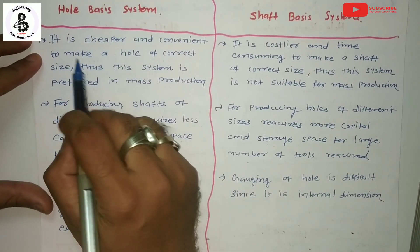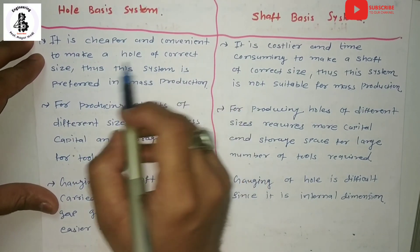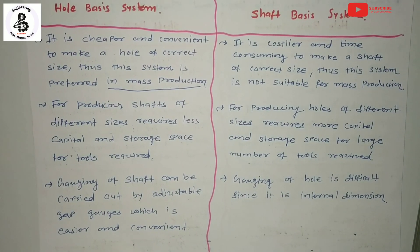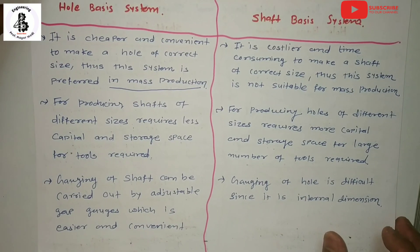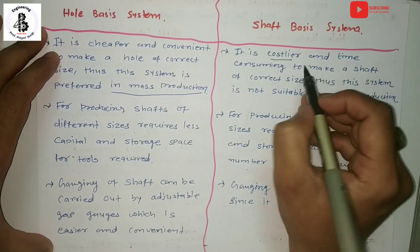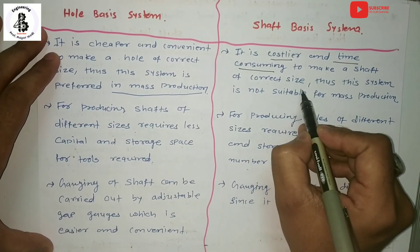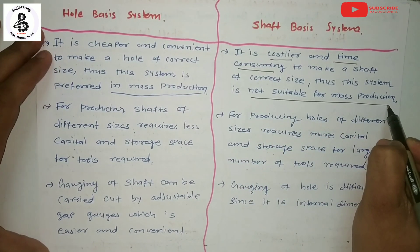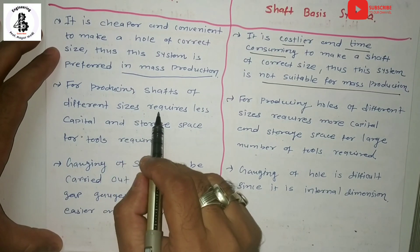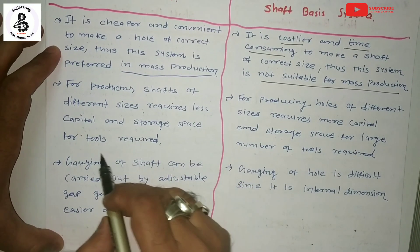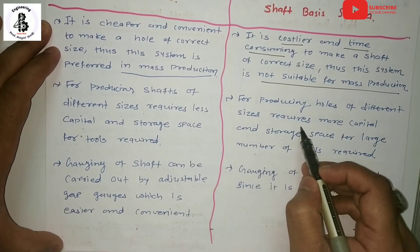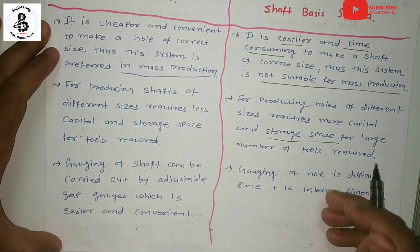For hole basis systems, it is cheaper and more convenient to make the hole of the correct size, so this system is preferred in mass production. For shaft basis systems, it is costlier and time-consuming to make a shaft of the correct size, so this system is not suitable for mass production. For hole basis systems, producing shafts of different sizes requires less capital and storage space for tools. For shaft basis systems, producing holes of different sizes requires more capital and storage space for a large number of tools.